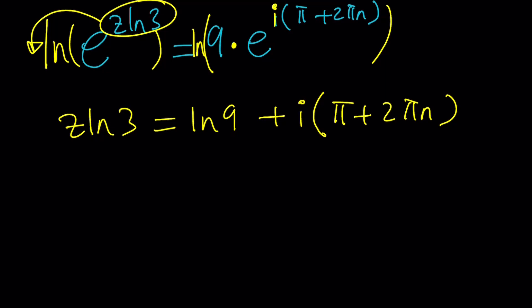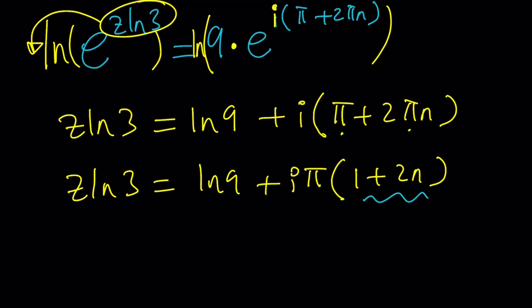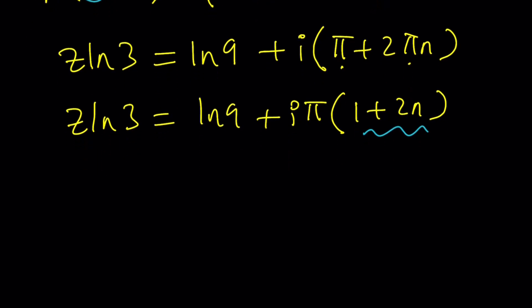Now let's simplify the right-hand side. I notice I have π, so I can factor it out and get π·(1 + 2n). This is an odd number when n is an integer — so we're talking about odd multiples of π, like π, 3π, 5π, 7π — they all give us negative 1 when exponentiated. Now we divide everything by ln(3), and that's going to give us the answer.